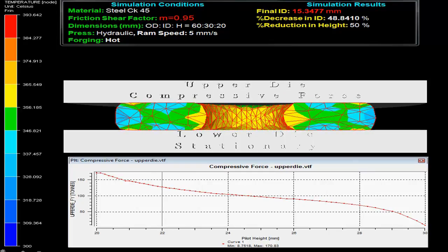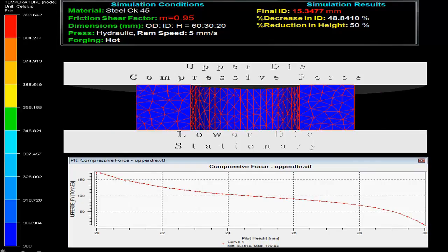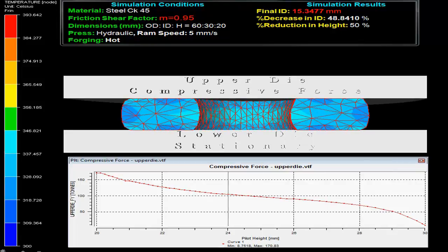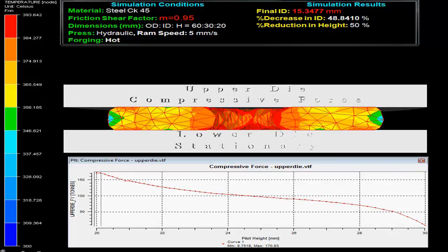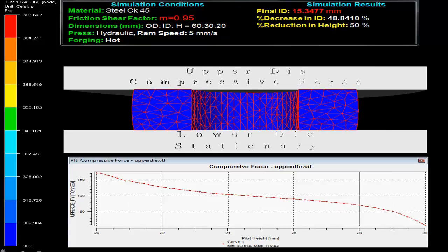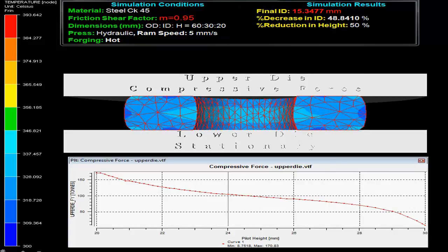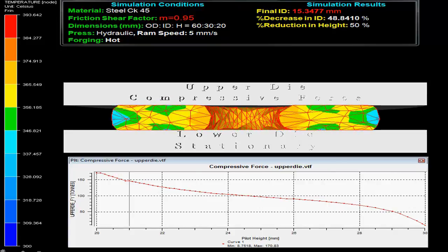On the top left corner of the video, one can observe the simulation conditions. The specimen material is steel with friction shear factor M equals 0.95, and initial outer diameter to inner diameter to height ratio of 60:30:20.